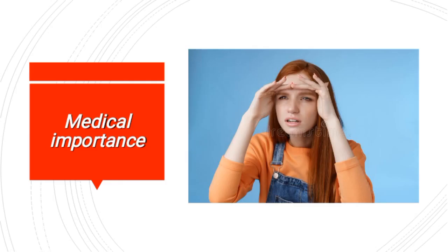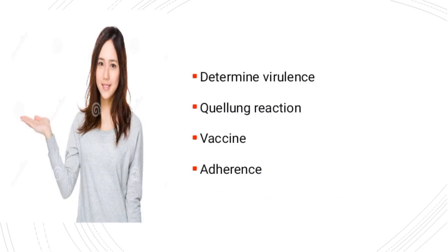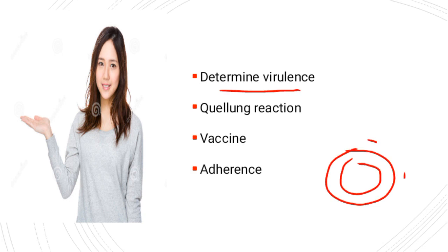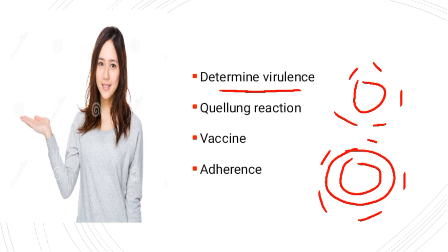Is there any medical importance of this capsule? The answer is yes. It determines the virulence — it means it increases the pathogenicity. For example, this is a bacteria containing a capsule, and the capsule carries a negative charge. When a bacteria enters the body, our phagocytes activate — for example, neutrophils. Neutrophils also contain a negative charge, so this negative charge is repelled by the negative charge of the bacterial capsule, and hence there is no phagocytic activity, resulting in increased virulence.